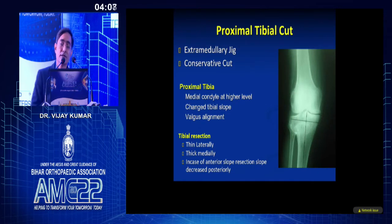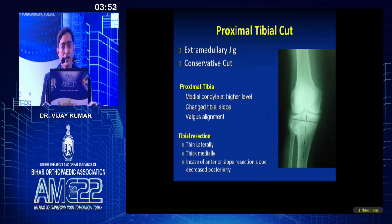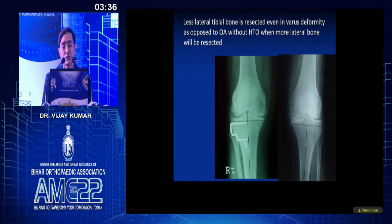For the proximal tibial cut, an intramedullary jig usually cannot be used, and the cut has to be very conservative. In a lateral closing wedge osteotomy, you cut very thin laterally and there is a bigger amount of cut on the medial aspect. You have to be careful of the tibial slope and take a very conservative cut — not more than 6 mm from the medial side or around 2 mm from the lateral side.